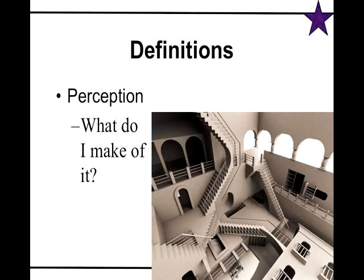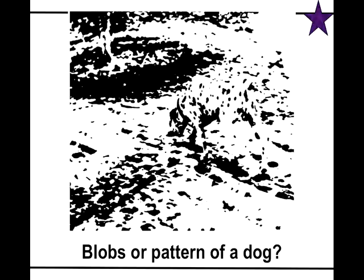In this Escher picture, the sensation for the stairs is all the same — they're all the same angles, they're just stairs. But the perception is that some of them are up, some are down, most of them are crazy. Sensation is just the input and perception is the interpretation that this picture is a little wacky. Similarly, looking at a picture of blobs, you could just see blobs, or you could see the dog — a change in perception based on the same sensation.